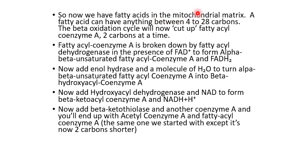We've finally got our fatty acids into the mitochondrial matrix and can start breaking them down. Fatty acids can have anywhere between 4 to 28 carbons, and what we're going to do is cut up the chain two carbons at a time for our beta oxidation cycle. Fatty acyl coenzyme A is broken down by fatty acyl dehydrogenase - we have a dehydrogenase so we're harvesting hydrogens from our molecule. The coenzyme in this case is FAD, and our end product is alpha-beta unsaturated fatty acyl coenzyme A. We get FADH2, which goes off to the electron transport chain.